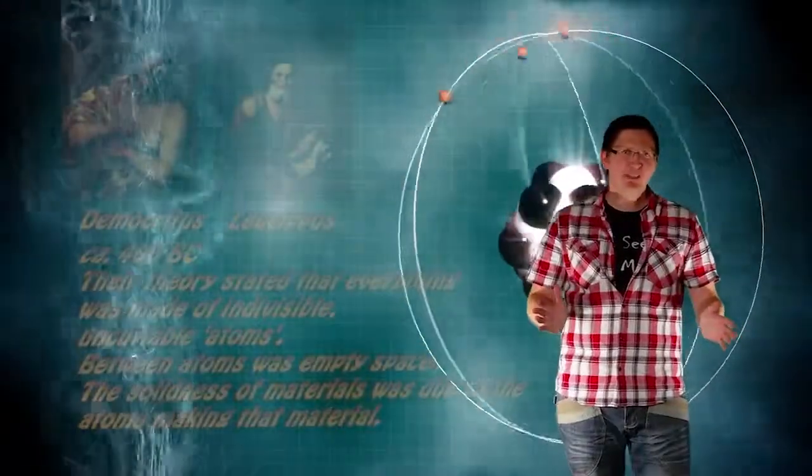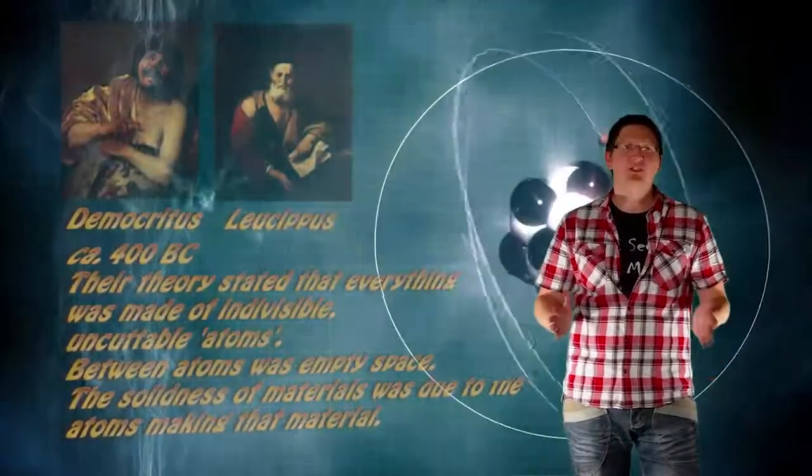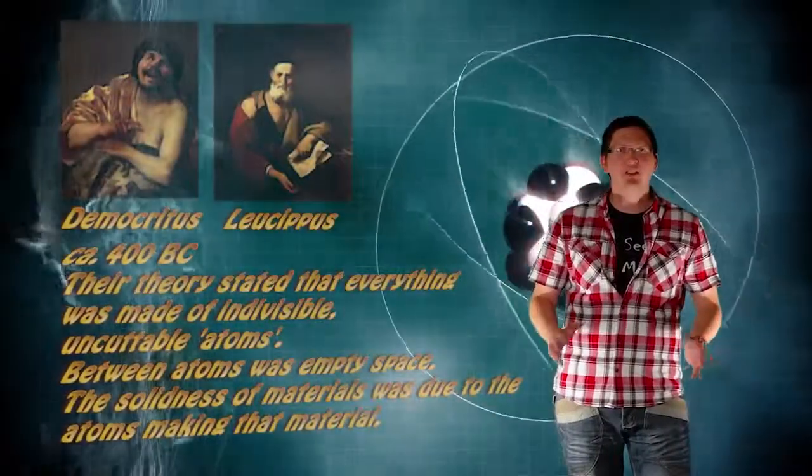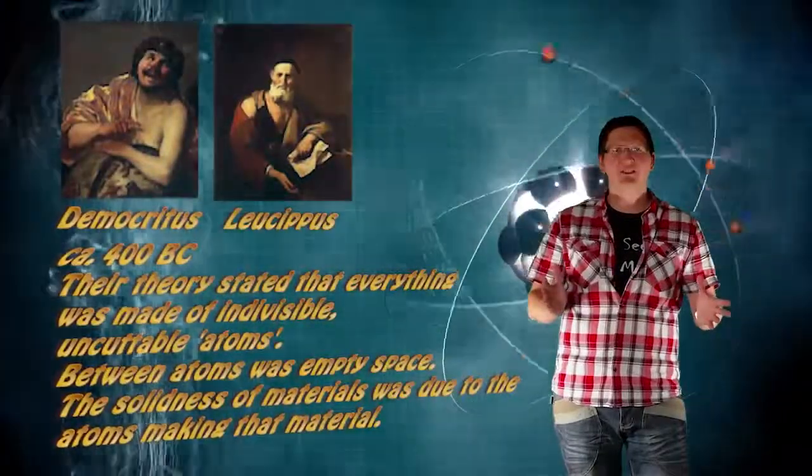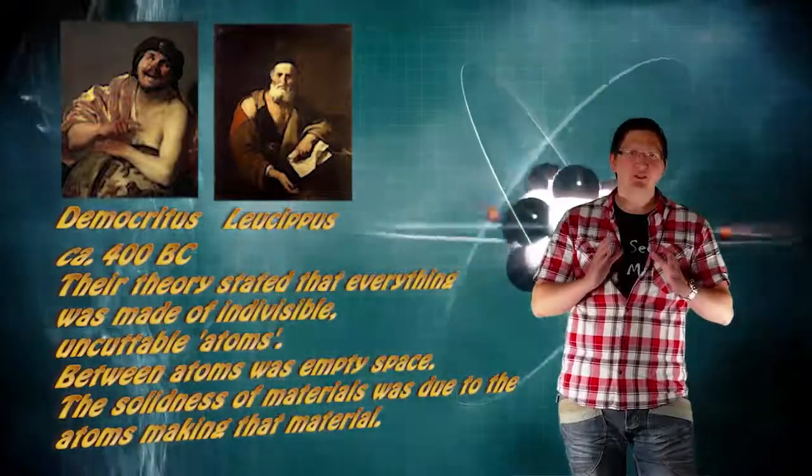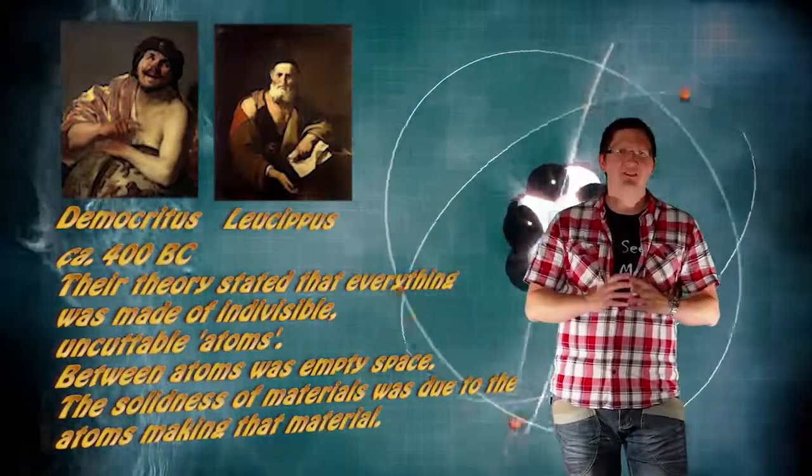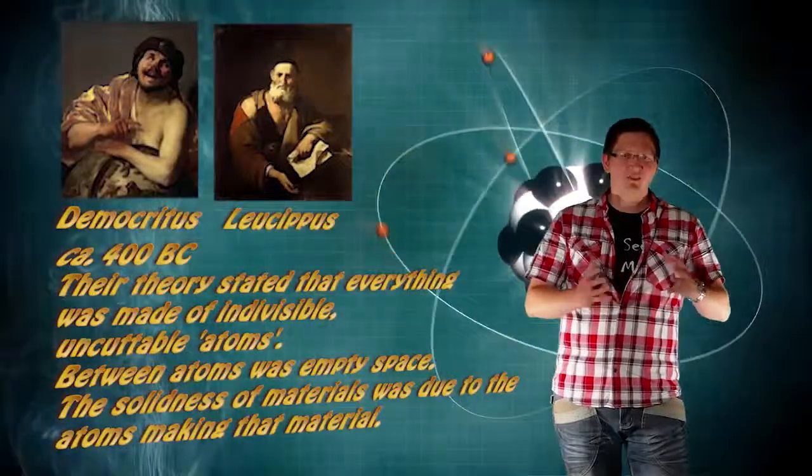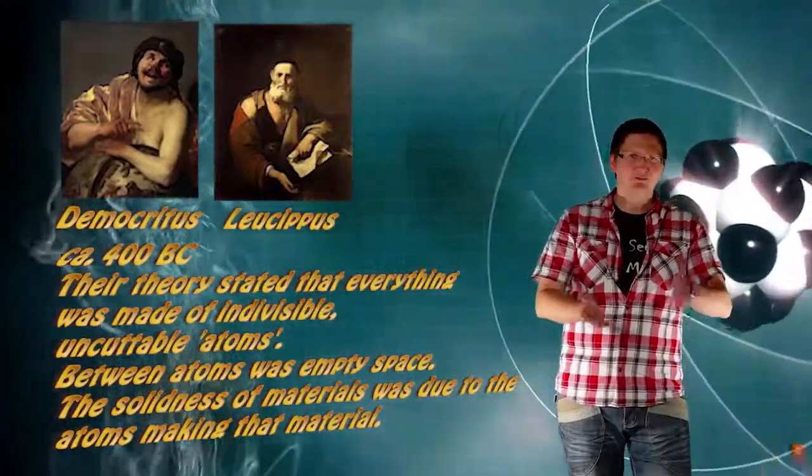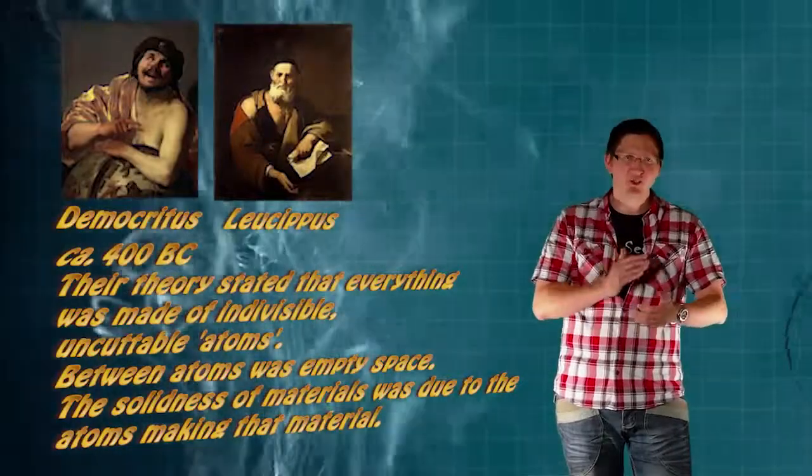In 400 BC two Greek philosophers, Democritus and Leucippus, devised a philosophy that all matter could be brought down into uncuttable, indivisible pieces of matter. So imagine you take a block of wood. You chop that piece of wood up. You take those chopped up pieces. You chop them up further.